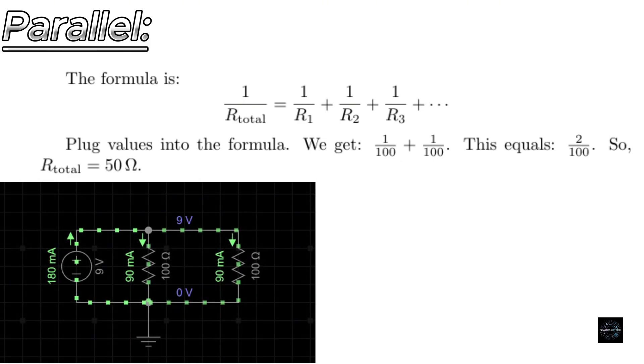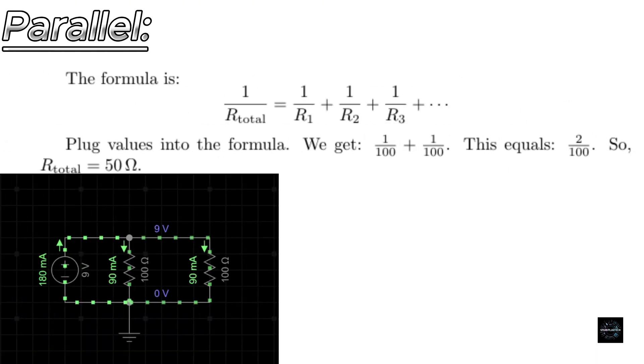For example, if we have two resistors of 100 ohms each, the total resistance is less than either of the resistors. Plugging into the formula, we get 1 divided by 100 plus 1 divided by 100, which equals 2 divided by 100, or 50 ohms.